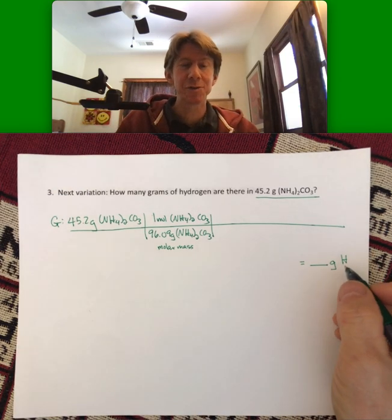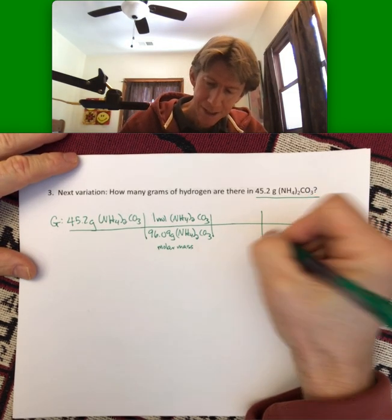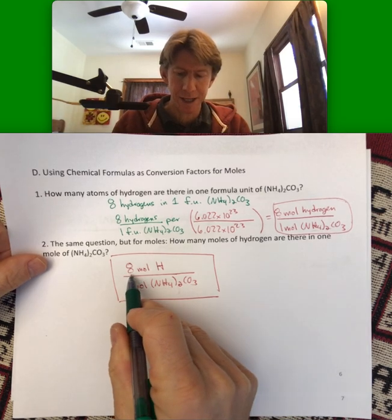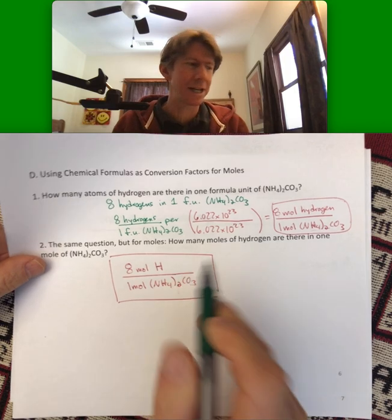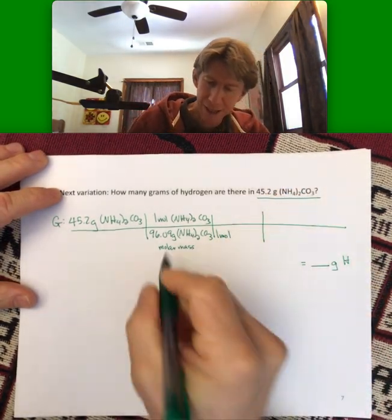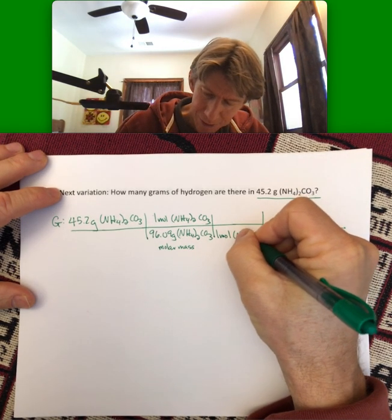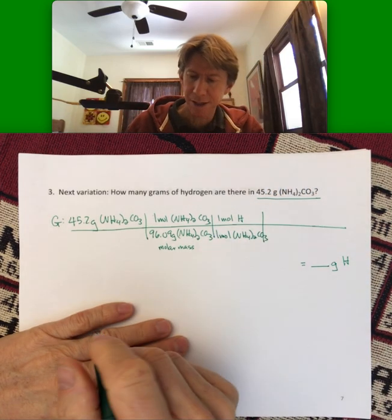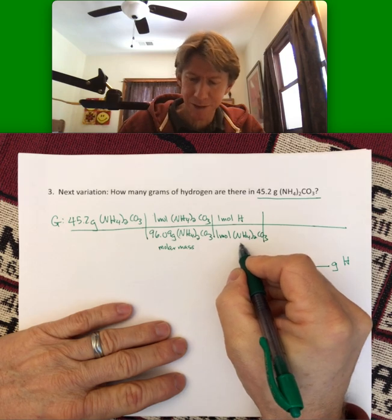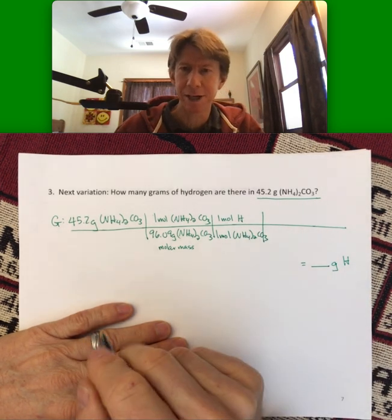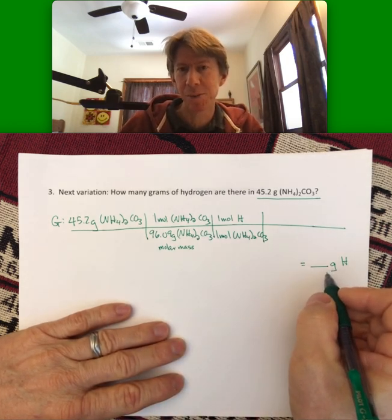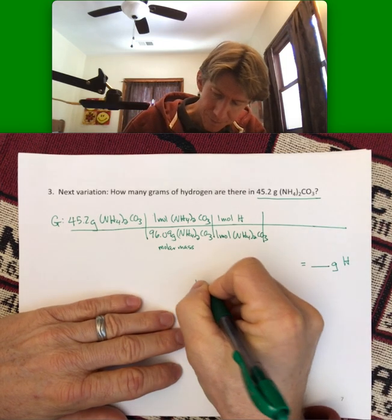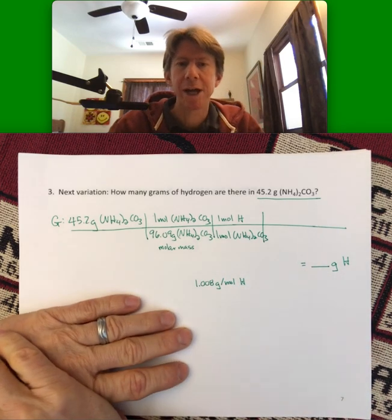It's 96.09 grams of ammonium carbonate for one mole of ammonium carbonate. And so our new friend, the conversion factor from the last page, says that for every one mole of ammonium carbonate, there are eight moles of hydrogen. And again, this is just based strictly on pulling it out of the formula. And I want my moles of ammonium carbonate on the bottom. And I don't know if this will fit. I apologize for that. I went over my little picket there. So this is our new unit conversion, again, based strictly on the formula. Now I can see I have moles of hydrogen and I want grams of hydrogen. That's going to be the molar mass of hydrogen, which from our periodic table is 1.008.